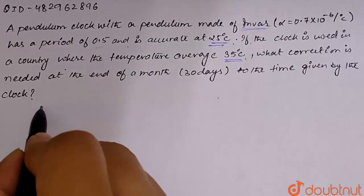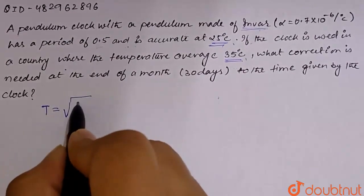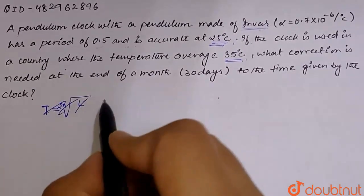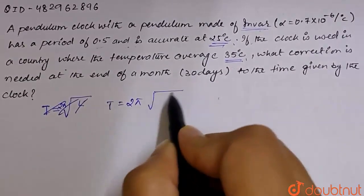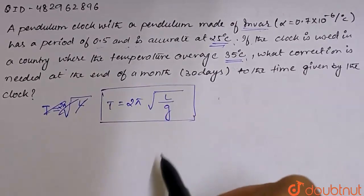The clock that we have provided, this pendulum time period, what are we doing? Time period is equals to 2 pi under root of L by g. This is our pendulum time period.